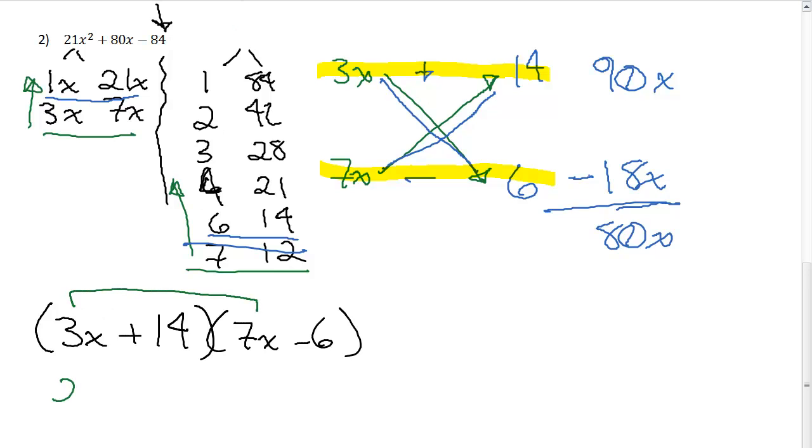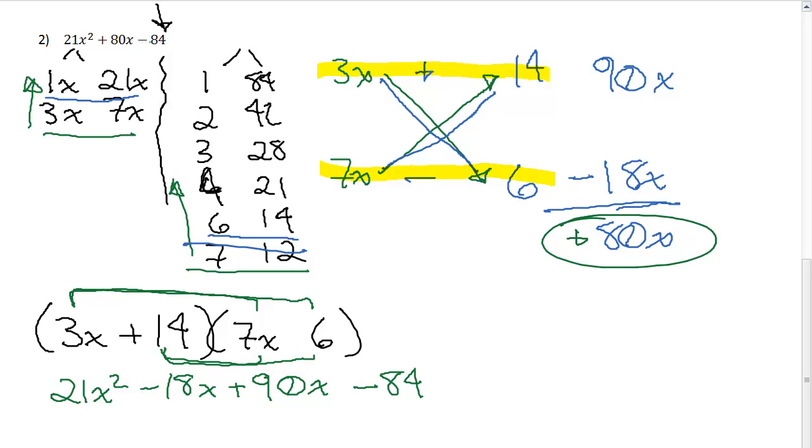3x times 7x is 21x squared. 3x times a negative 6 is going to give me negative 18x. 7 times 14 is going to give me my positive 90x. And that does give me my positive 80 that I wanted. And then 14 times 6 is going to give me that negative 84 because of the negative sign right there. And I did want it to be negative. So that makes me happy. So that checks my signs. So this is the correct answer right there as the factored form.